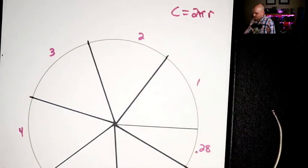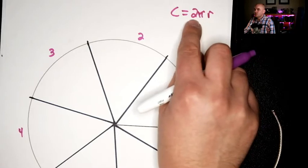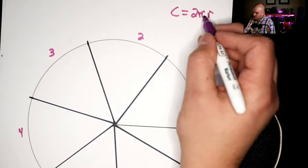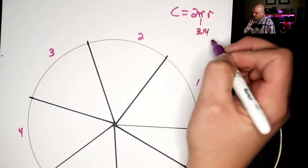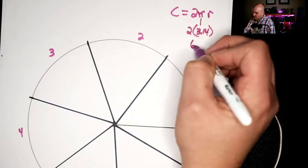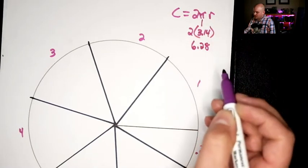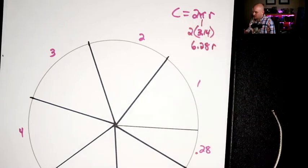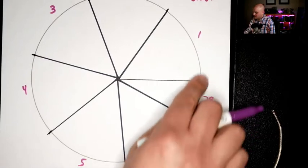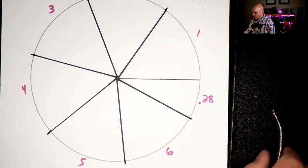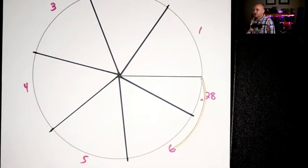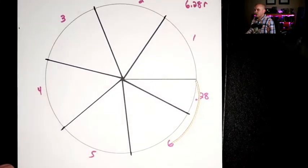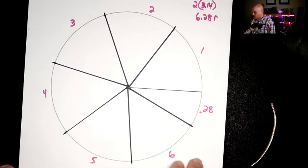That's the distance around the circle—the radius multiplied by two and by pi. So two times pi, where pi is approximately 3.14, gives us 6.28 times the radius. The circumference of a circle is 6.28 radii, which is exactly what I just marked out. This last bit should be close to 0.28 of my radius. Some might be slightly off due to human error, but that's what it should work out to be.